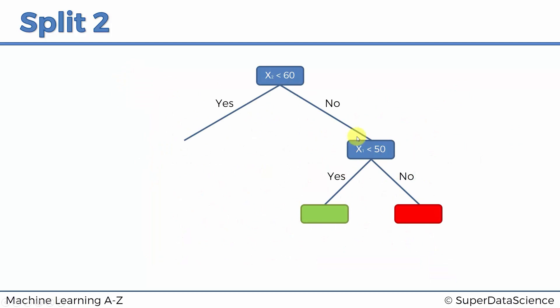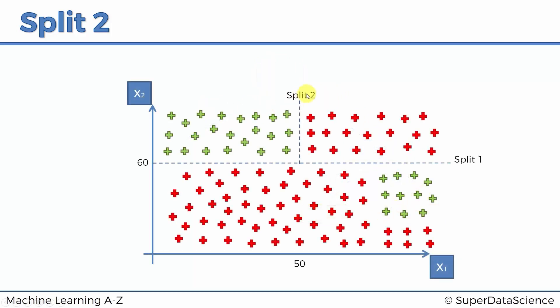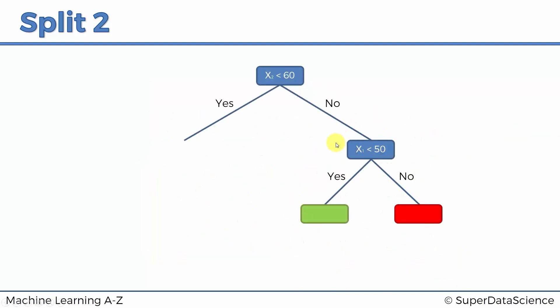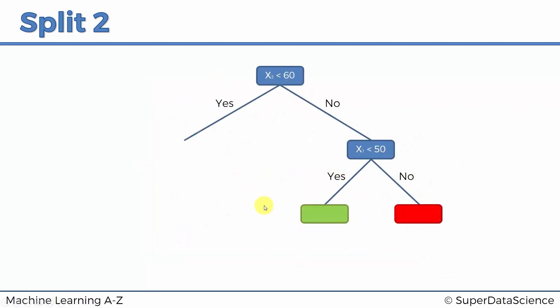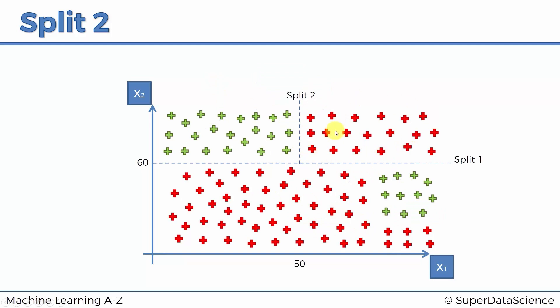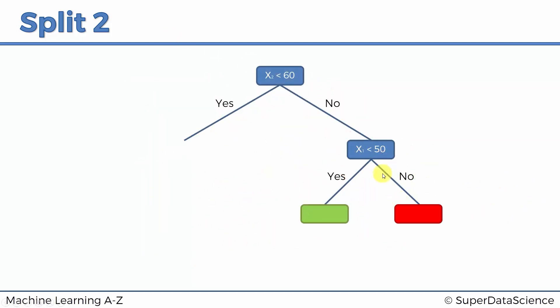Split two only splits the data that is above 60 in the x2 variable. We're only dealing with data that is above x2. Split two happens at 50 for the x1 variable. x1 is less than 50, yes or no? This split already can tell us whether something is green or red. If we're already above 60, and then below 50, then it's green. If we're above 50, then it's red. That's how this classification works.